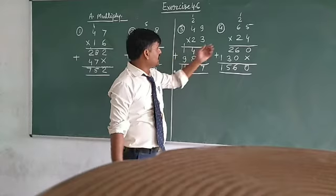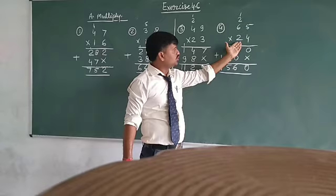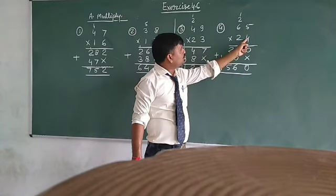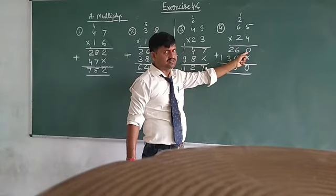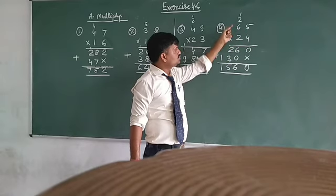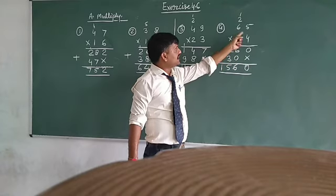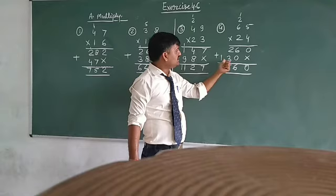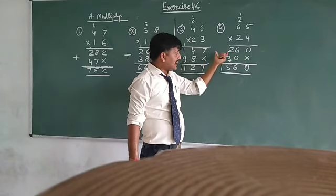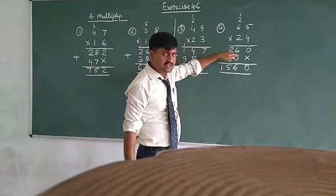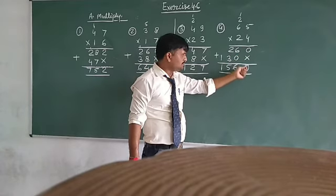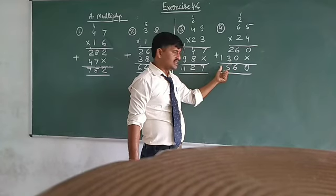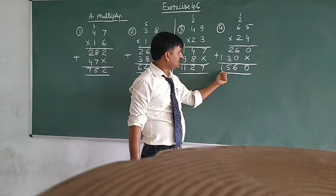Repeat once again. This is the last question: 65 × 24. 4 × 5 = 20, write 0 in the 1s place and carry 2. 4 × 6 = 24, plus 2 = 26. Then 2 × 5 = 10, write 0 and carry 1. 2 × 6 = 12, plus 1 = 13, so we get 130. Add 260 + 130: 0 in 1s place, 6 + 0 = 6 in 10s place, 3 + 2 = 5, and carry 1. Your answer is 1560.